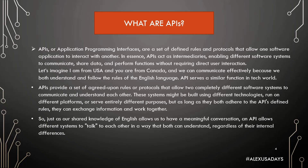APIs provide a set of agreed-upon rules or protocols that allow two completely different software systems to communicate and understand each other. These systems might be built using different technologies, run on different platforms, or serve entirely different purposes. But as long as they both adhere to the API's defined rules, they can exchange information and work together, regardless of their internal differences.